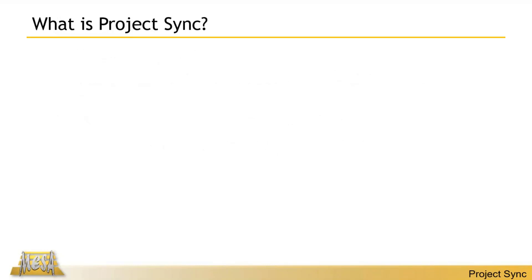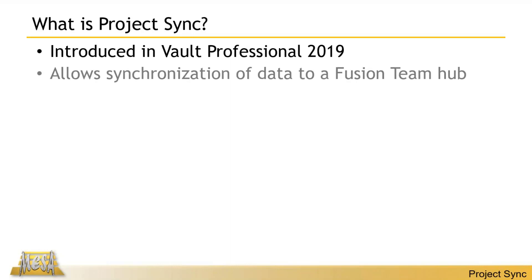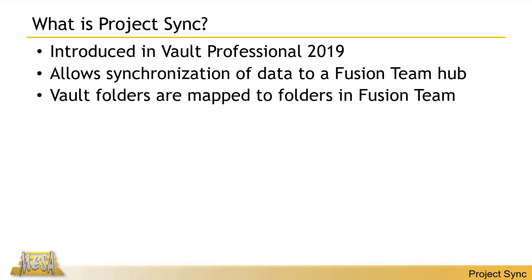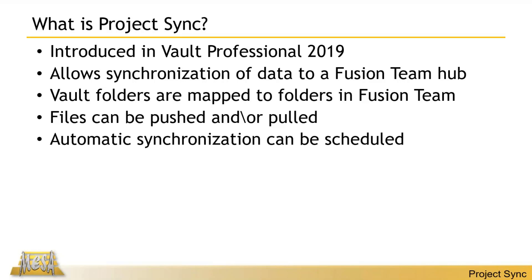Project Sync was introduced with Vault Professional 2019 and is in all Vault Professional products since then — 2019, 2020, 2021. It allows you to synchronize data to a Fusion Team Hub or Fusion Team Site. Folders are mapped from a Vault folder to a Fusion Team project or folder. You can push files, pull files, or have it go both directions. You can automate synchronization on a schedule — at a specific time each day or every so many hours — or do it manually on demand.